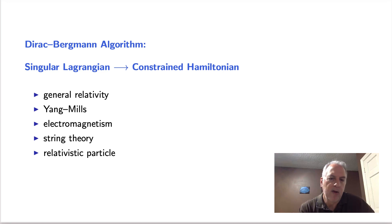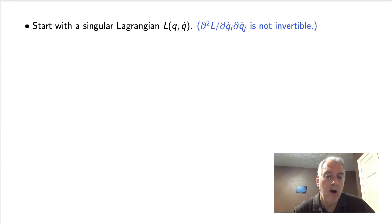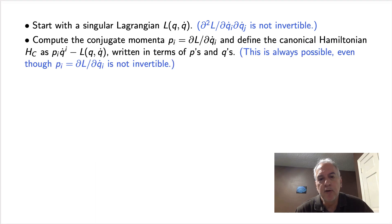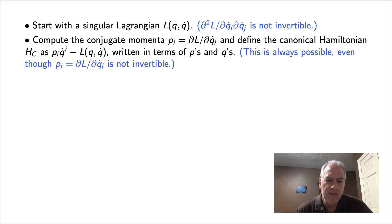The Dirac-Bergman algorithm is actually much richer than what we see in any one example. We start with a singular Lagrangian — by singular, we mean that the second derivative of L with respect to the velocities is not invertible. Then we compute the conjugate momenta, p equals partial L with respect to the velocities, and define the canonical Hamiltonian in the usual way as pq-dot minus L, written in terms of the p's and q's. It turns out this is always possible, even though the definition of the p's is not invertible for q-dot as a function of p and q.